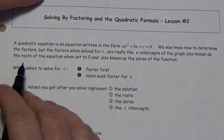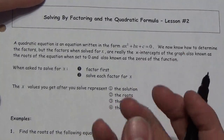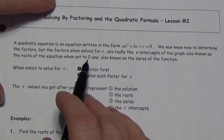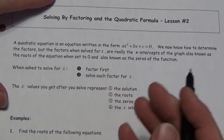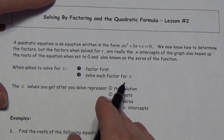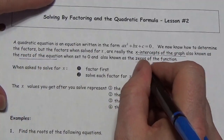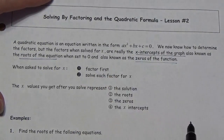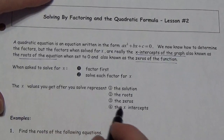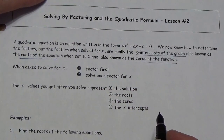We know how to determine the factors, but sometimes we can't, so sometimes we have to use the quadratic formula. Remember that when we find the factors, what we're really looking for are the x-intercepts of the corresponding graph — you might see these called the roots of the equation. We should try factoring first and then solving for each x value, but if that doesn't work then we'll use the quadratic formula.